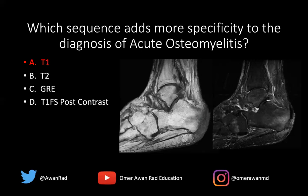We know that T1 adds more specificity because of the replacement of the normal fatty marrow with confluent dark T1 hypointense signal. Had the question been about sensitivity, of course the answer would have been T2-weighted imaging.